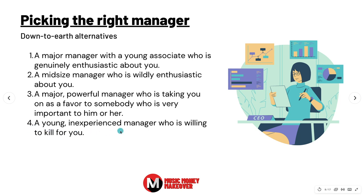Option four: a young, inexperienced manager who is willing to kill for you — which is where most of you will be when getting your first manager. You want this person's enthusiasm on beast mode. They have to be so over-the-top motivated for you that you can't figure out where they find all the energy. This is what you're looking for when just starting out. These other options — one, two, and three — won't be good for you unless you've already done the groundwork. Most of you will land at number four. Don't go looking for that big manager; they're looking for you to have already done some work.